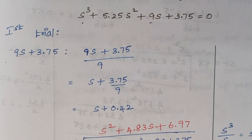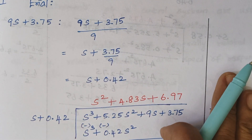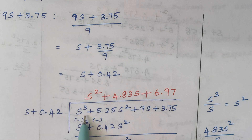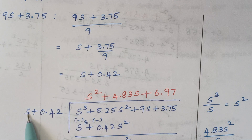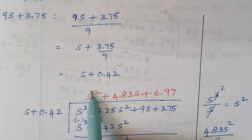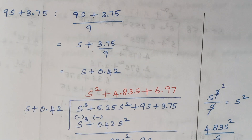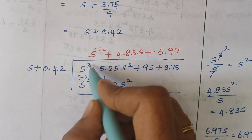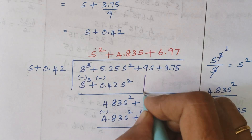Now we are going to divide our cubic equation by this term — s plus 0.42. This is the cubic equation and this is the term we just got. We are going to divide. Here we are having s cube, so I am going to divide s cube by s, which gives s square. Write s square here. Now we are going to multiply this term with s square. So s into s square gives s cube, and 0.42 into s square gives 0.42 s square. The next step is subtraction — these two terms cancel each other and we are getting 4.83 s square.